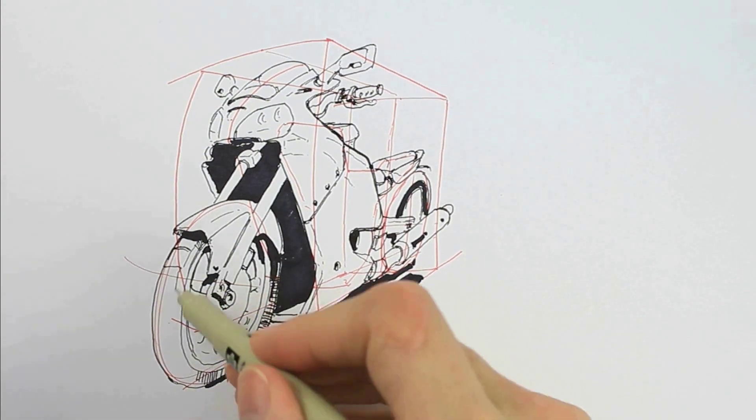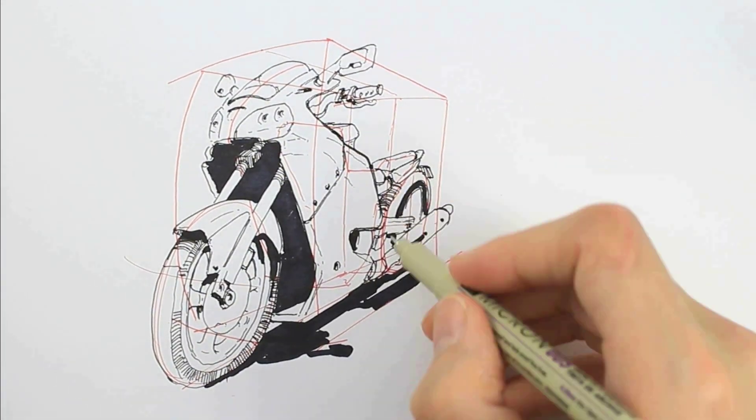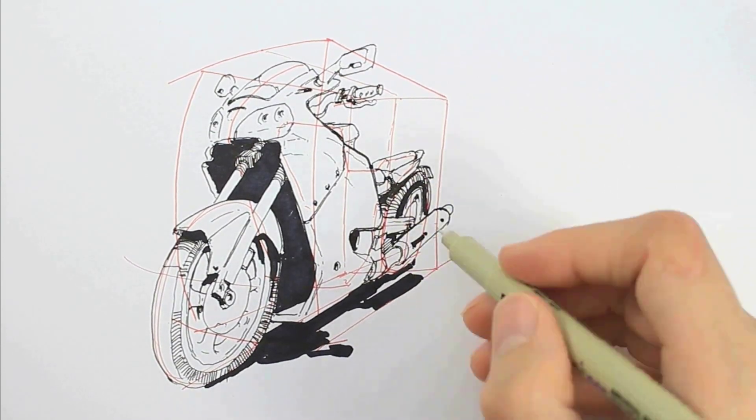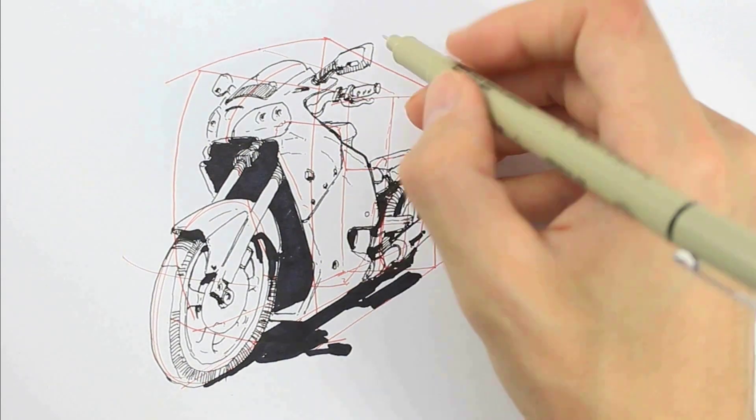Filling in the shadow really solidifies the relationship between the subject and the ground plane. Now I'm adding in some hatching to show a little bit of lighting information and add in some texture.